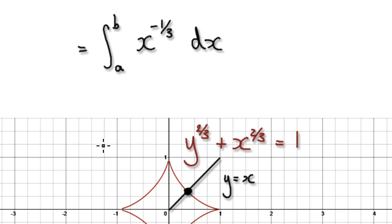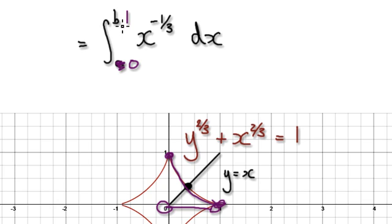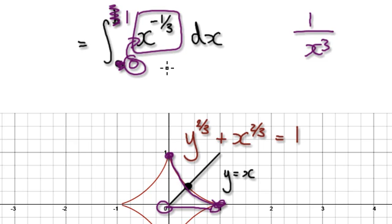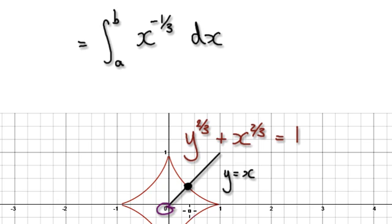Currently we are here. If you try to find the arc length from 0 to 1, it will break down, because if you put 0 into here — what you've got is 1 over x to the power 3 — you get 1 over 0, so it breaks down. You can't evaluate it from 0 to 1. So rather than evaluating from 0 to 1, locate this point and integrate from the x-value here to 1. I will continue in the next video. Thank you.